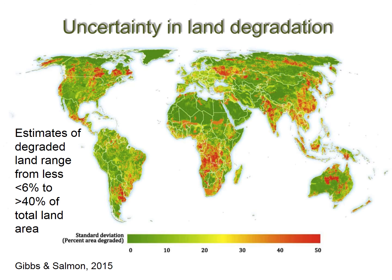But we remain highly uncertain on how much land is degraded and where. Estimates of degraded land range from anything below 6% of land area to more than 40%. With this uncertainty, we are challenged to make progress on how to measure where we are and our progress towards achieving these goals.